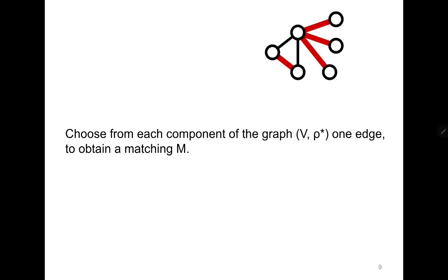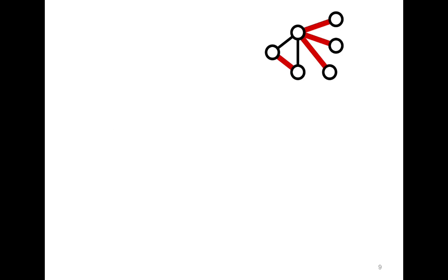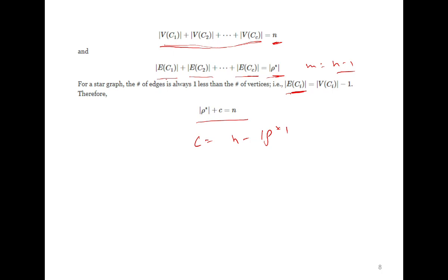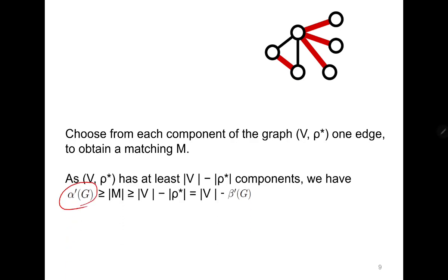Choosing one edge from each component gives a matching M. We have shown c = n − β'(G). Since α'(G) is the maximum matching, α'(G) ≥ c = n − β'(G), which gives α'(G) + β'(G) ≥ n. On one side we proved α'(G) + β'(G) ≤ n, and on this side α'(G) + β'(G) ≥ n. From these two, we conclude α'(G) + β'(G) = n.